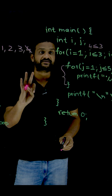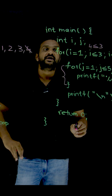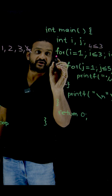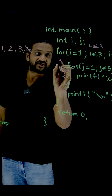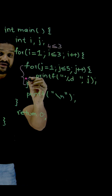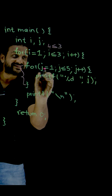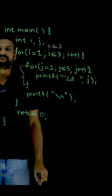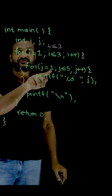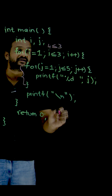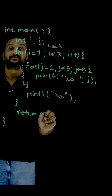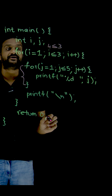In the first iteration where i equals 1, we come into the inner loop. How many times does this inner for loop iterate? The value of j is initialized to 1, and the condition is j less than or equal to 5, so this loop is going to iterate 5 times.